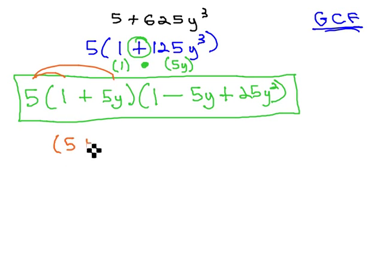Let's do that by first distributing the 5 through the first parentheses. That would give us 5 plus 25y, times 1 minus 5y, plus 25y squared.